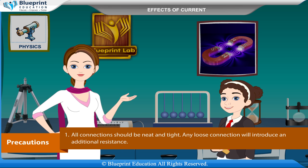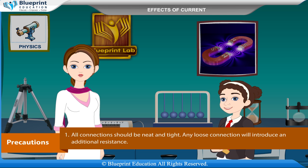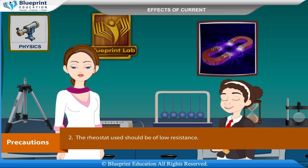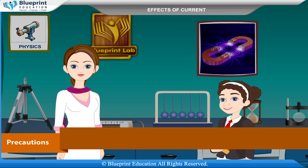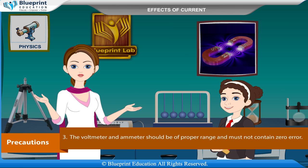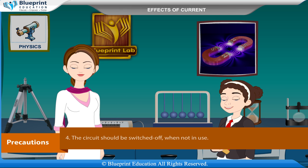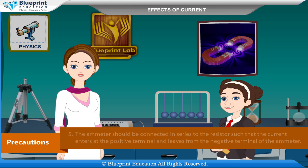Precautions: All connections should be neat and tight. Any loose connection will introduce an additional resistance. The rheostat used should be of low resistance. The voltmeter and ammeter should be of proper range and must not contain zero error. The circuit should be switched off when not in use.